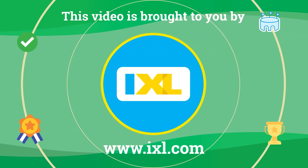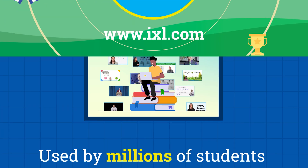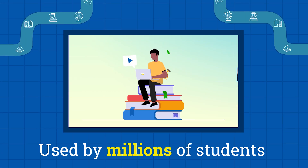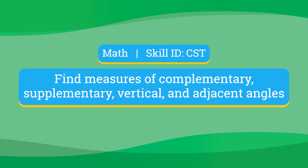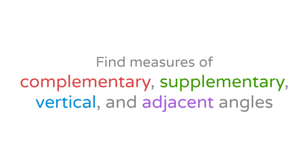This video is brought to you by iExcel, used by millions of students worldwide to get ahead in math, English, and more. We can use one angle to find the measure of another, and to do this we can use some tricks based on how the angles are arranged. Complementary, supplementary, vertical, adjacent — these arrangements can help us find the measure of angles that share a common vertex.